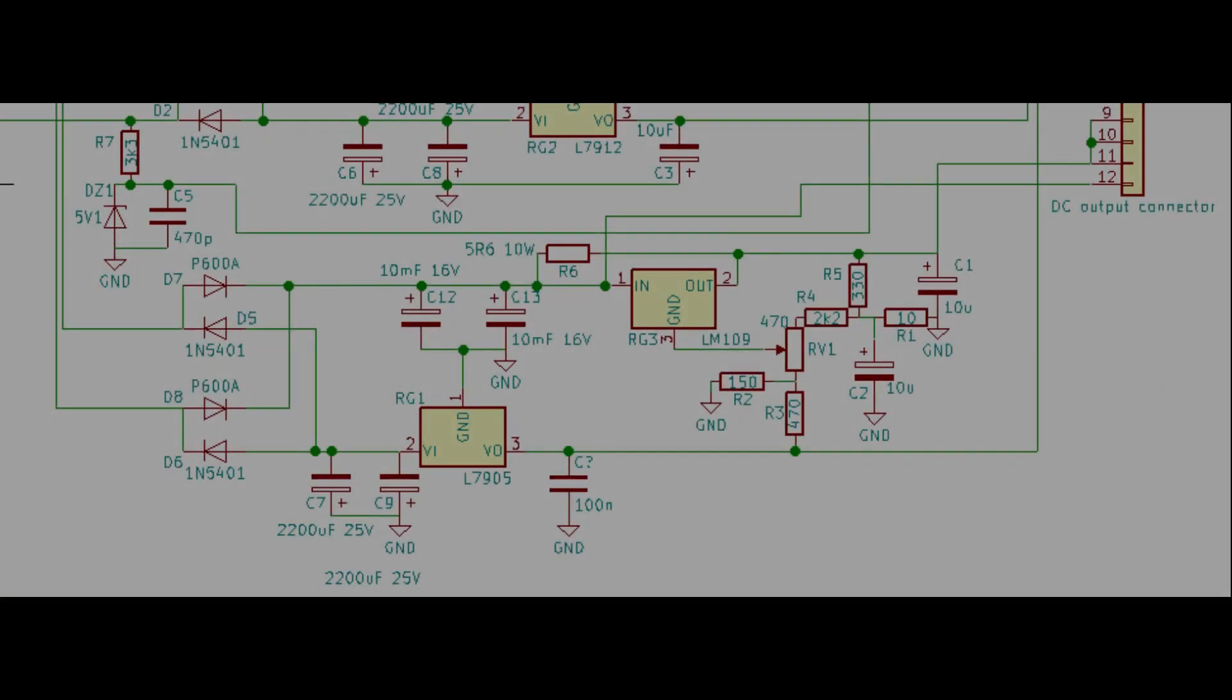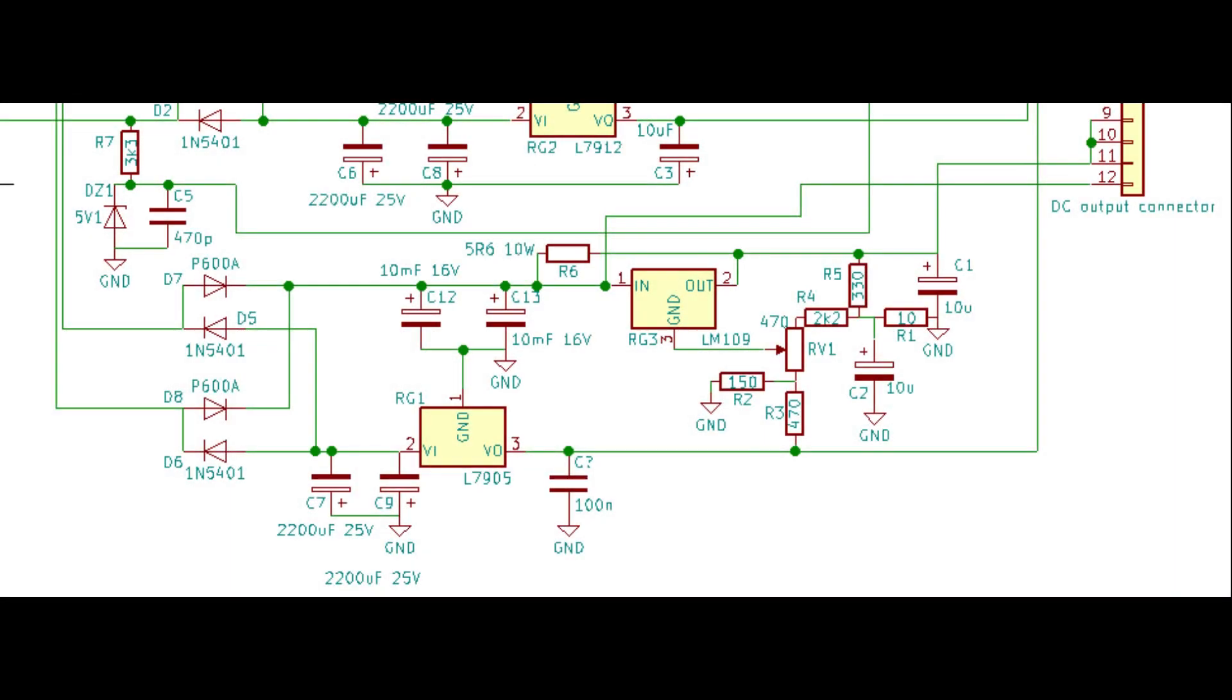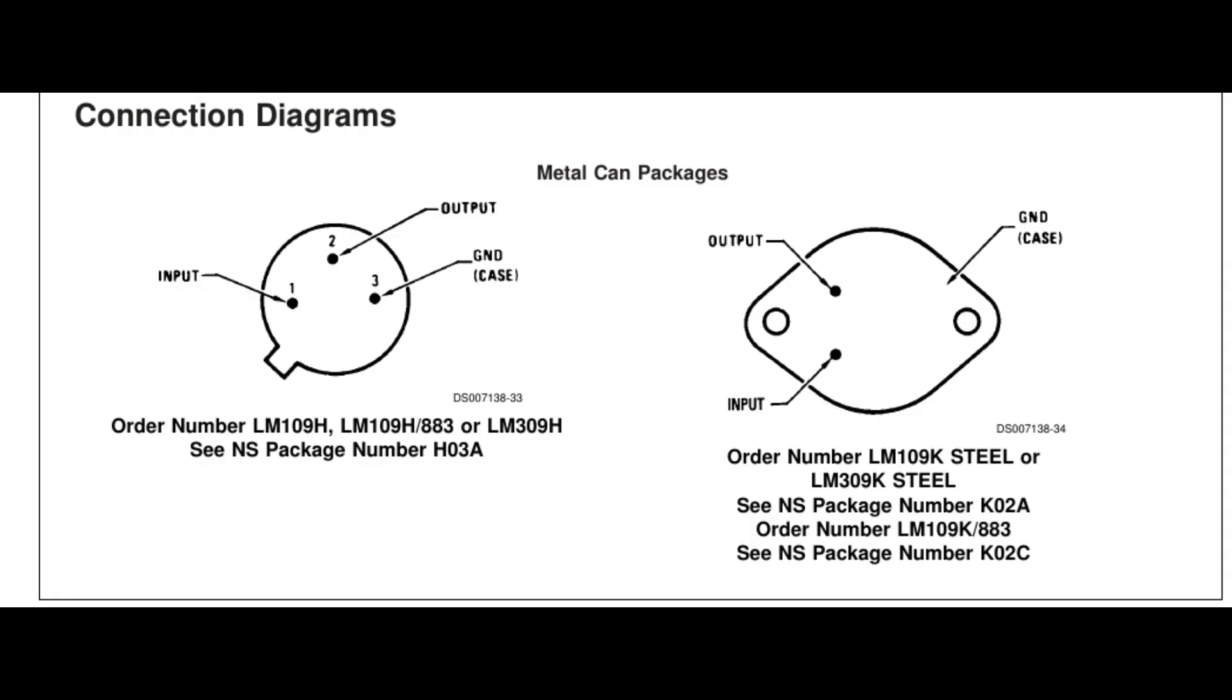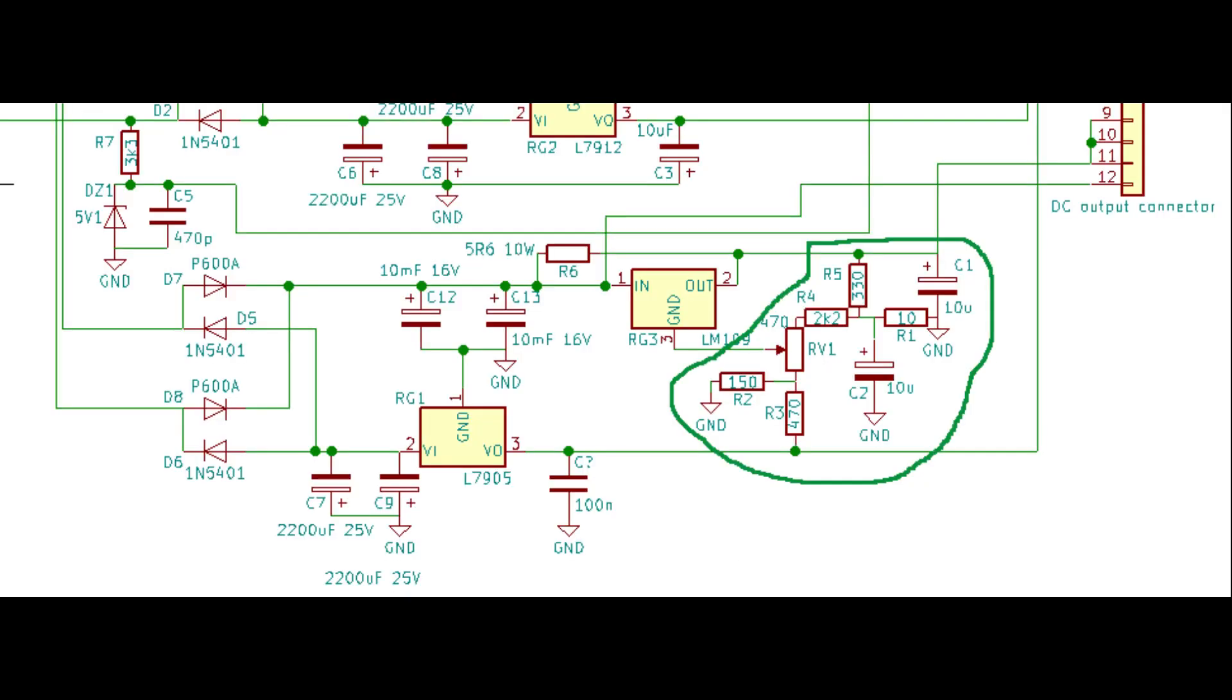The plus 5V rail is regulated with a slightly more complex circuit. First of all, the likely candidate for the TO3 regulator is the LM109K, since the pinout is compatible and also its current rating is acceptable as we are going to see later. The LM109K is a fixed 5V regulator, but this small circuit can move the reference ground of the regulator between a slightly negative voltage obtained with a resistive divider between the minus 5V rail and ground.